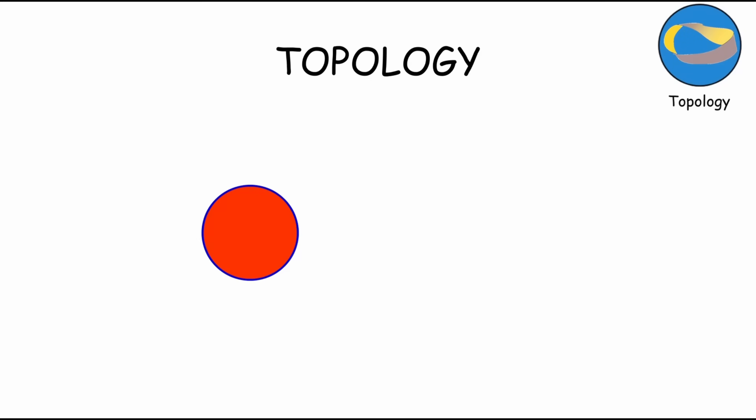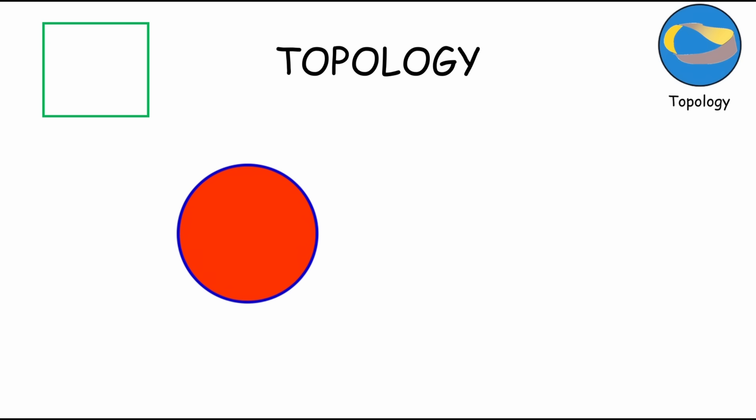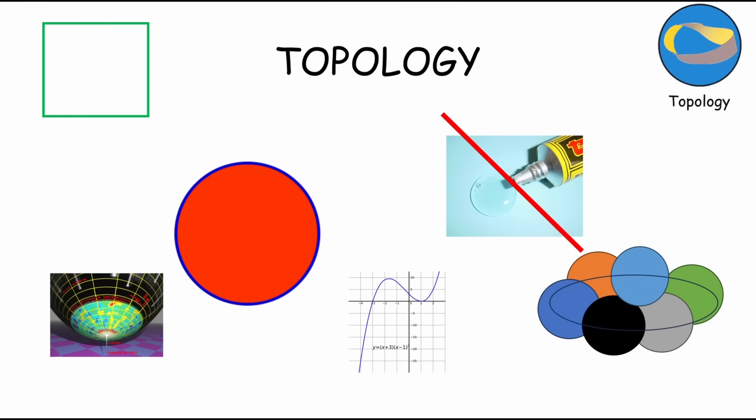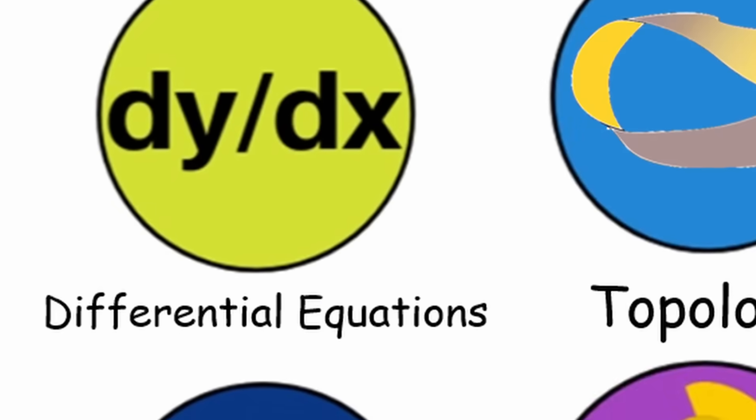Topology is a branch of mathematics that deals with the properties of space that are preserved under continuous deformations such as stretching, crumpling, and bending, but not tearing or gluing. Topology often includes the study of open sets, continuity, compactness, and various topological structures like manifolds.